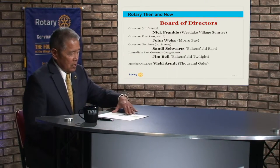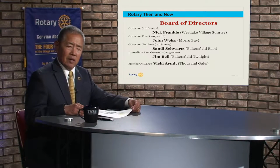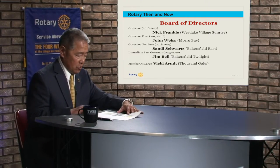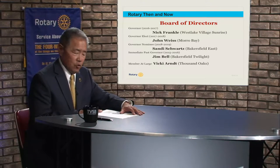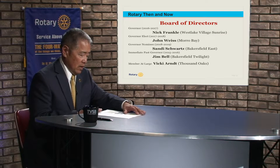The next slide shows the board of directors. Our district is incorporated and governed by the board of directors. The current governor is Nick Frankel of Westlake Village. We have governor-elect John Weiss from Morro Bay, governor nominee Sandy Schwartz from Bakersfield East, immediate past governor Jim Bell from Bakersfield Twilight, and Vicki Arndt from Thousand Oaks as a member at large — selected by the current sitting governor. This structure was put in place around 2012-2013 under past governor Frank Ortiz.